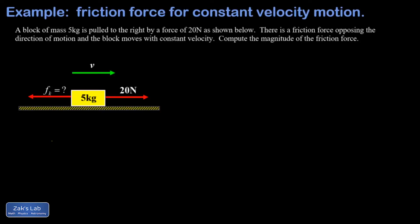This problem is really a concept question about net force. We're told that we're pulling this block along with a 20 newton force. The block has a mass of five kilograms and there's a friction force acting on this block, and that's what we're trying to find. A key point here is that we're told the block moves at constant velocity.